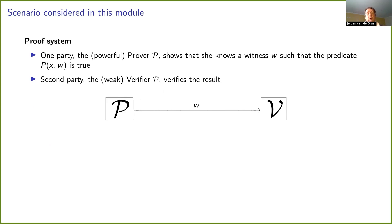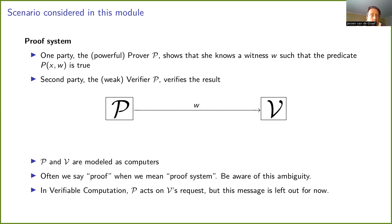In their context, they consider a scenario called a proof system. We have two parties: the powerful prover P, who shows that she knows a witness W such that the predicate P(X,W) is true, and a second party called the verifier — usually thought of as the weaker party who verifies the result. On the left we have the prover, on the right the verifier — a convention we will continue throughout all the slides in this course. Note also that we often say 'proof' when we mean 'proof system,' so be aware of this ambiguity.